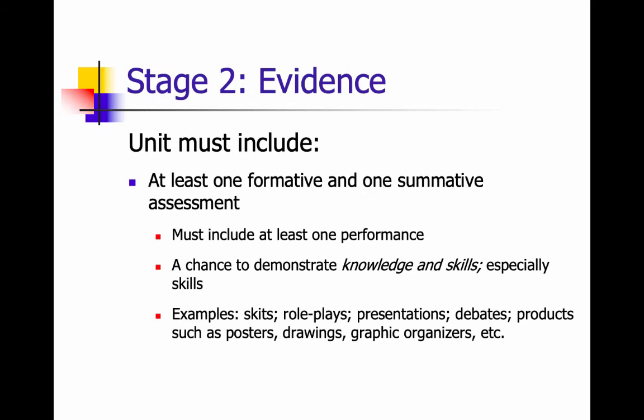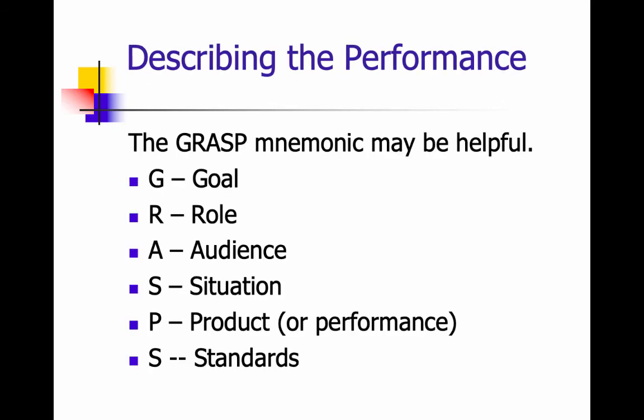The unit must include one formative and one summative assessment, and at least one performance. We talked about describing that performance using the GRASS mnemonic: goal, role, audience, situation, product, and standards. I've added to the website a worksheet developed by Wiggins and McTighe to help you describe a performance using GRASS. You don't have to use the worksheet, but it may be helpful if you're struggling to describe your performance fully.